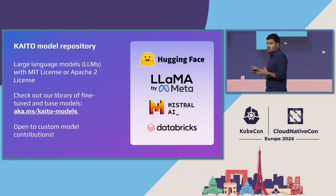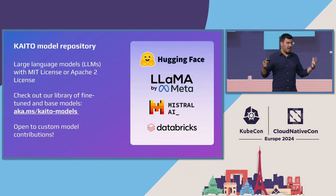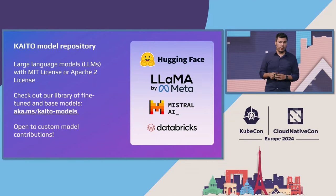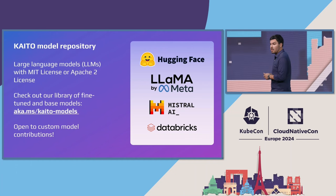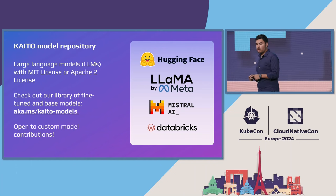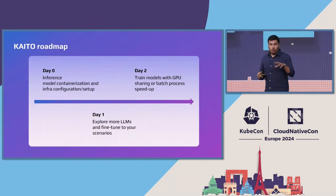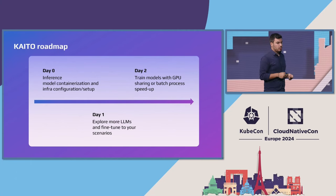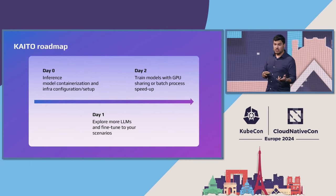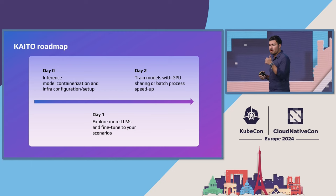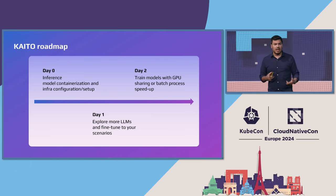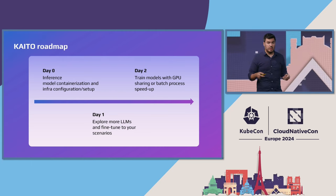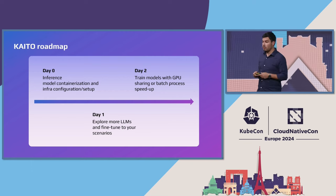There are many models — we have 10 models today, and we're welcoming every contribution of any open source model that you might want. Go to aka.ms/KaitoModels and contribute your model today. Our roadmap is currently focused on inferencing, infrastructure provisioning, and containerization, but we really want to move fast into fine-tuning, RAG, and even training. Let us know what's most important for you and what we should help you with.